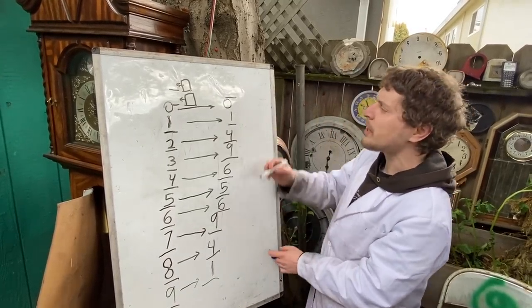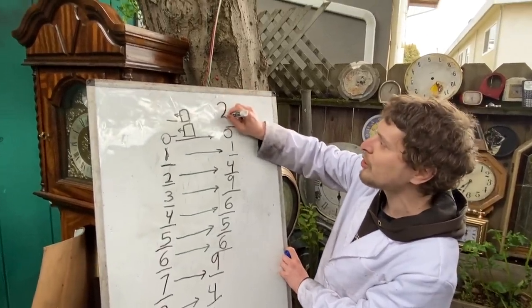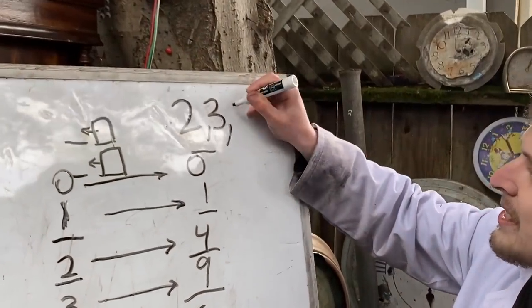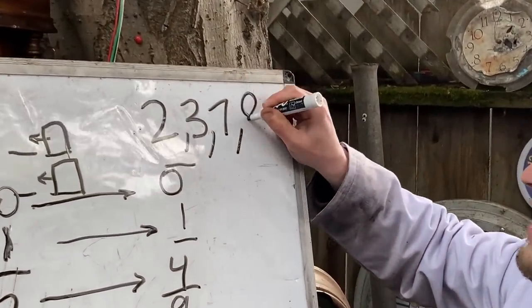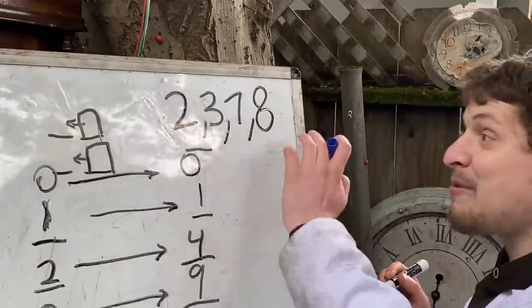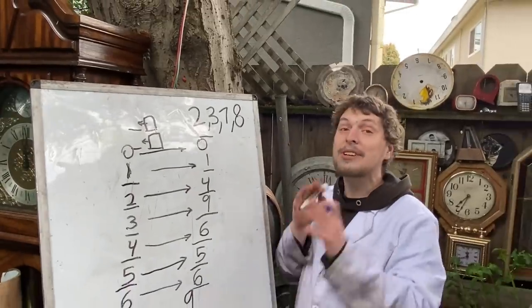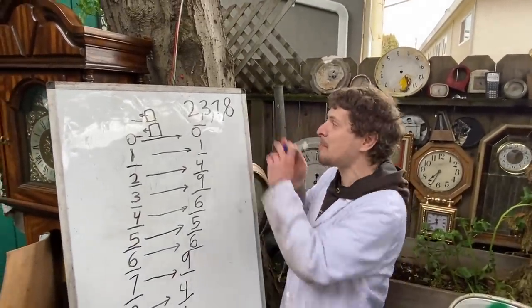And what's missing here? We're missing two, three, seven, and eight. All of those digits, a square number cannot end in, in our base 10 system.